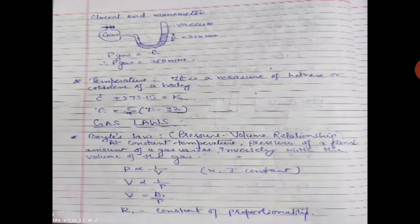In the closed-end manometer, a U-shaped tube has one shorter limb connected to the vessel containing the gas, while the longer limb is closed. The space above the mercury on the closed end is completely evacuated. The gas exerts a force on the mercury, forcing the level down on the near side and up on the far side. The difference in mercury level in the two limbs equals the pressure of the gas. Temperature is the measurement of hotness or coldness of a body, calculated in three scales: degree Celsius, Kelvin, and Fahrenheit. Kelvin = degree Celsius + 273.5, and degree Celsius = (degree Fahrenheit − 32) × 5/9.